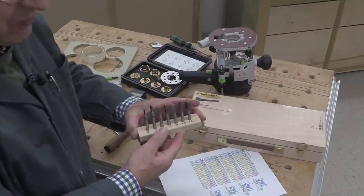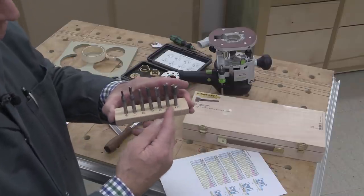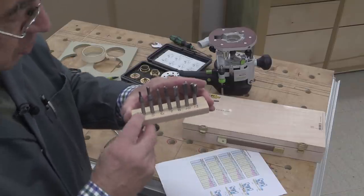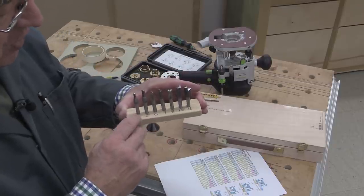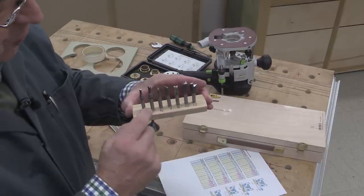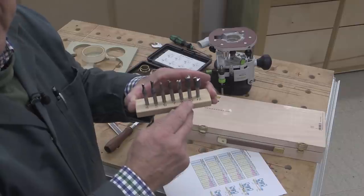The same as last time, I've got my range of seven metric size cutters from Trend. And they go from four up to 12 millimetres, four, five, six, seven, eight, 10 and 12.